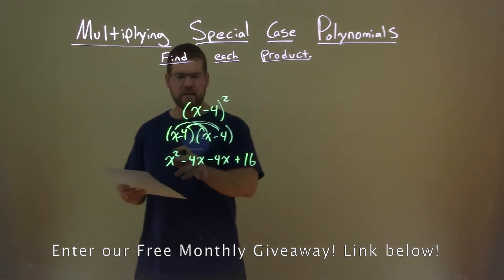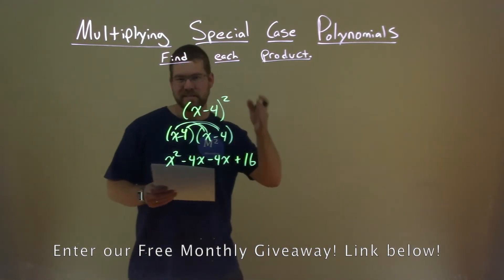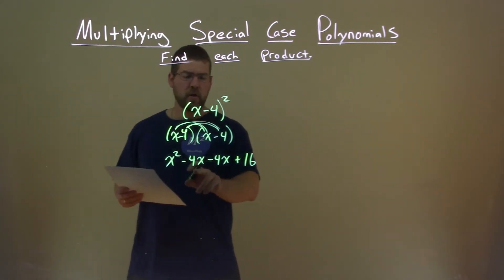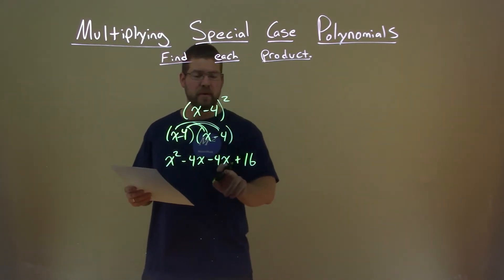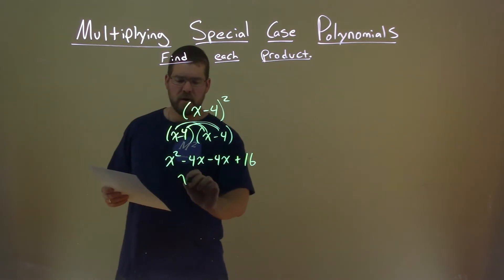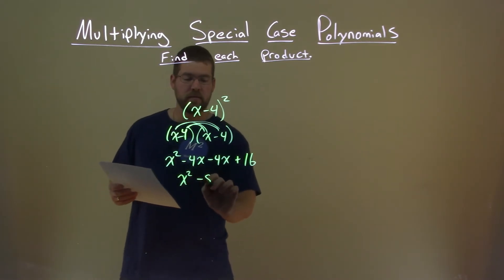So now we're left with x squared minus 4x minus 4x plus 16. The only like terms that I see are in the middle, minus 4x and minus 4x. Together, they're combined to be minus 8x.